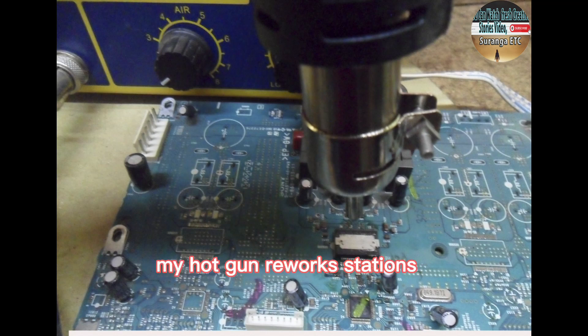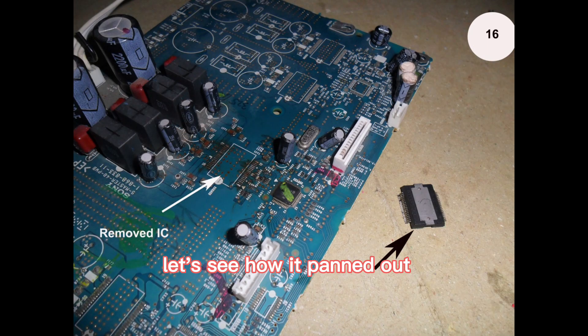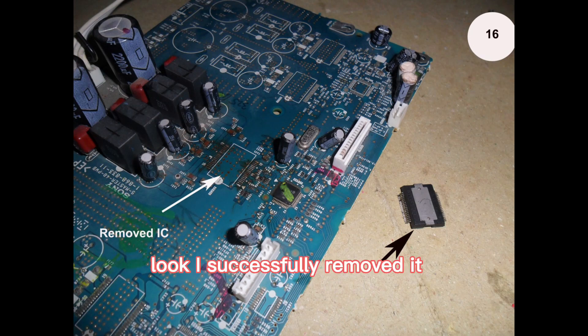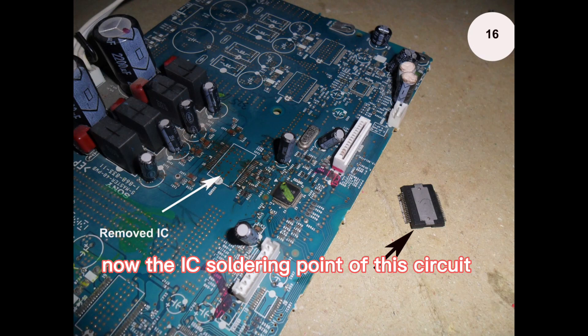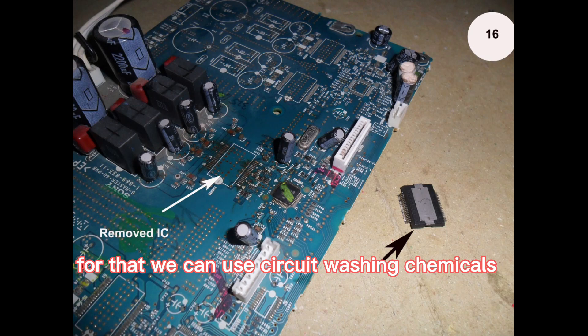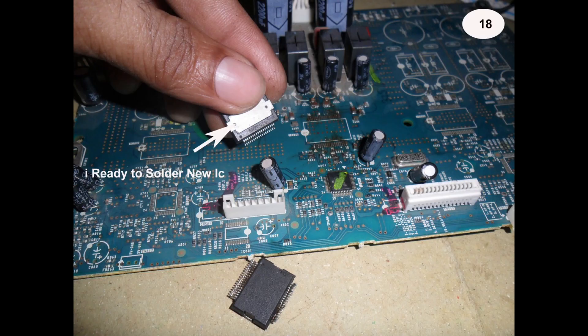I used for that my hot gun rework stations. Let's see how it panned out. Look, I successfully removed it. Now the IC soldering point of this circuit should be cleaned well. For that we can use circuit washing chemicals. Look at this.